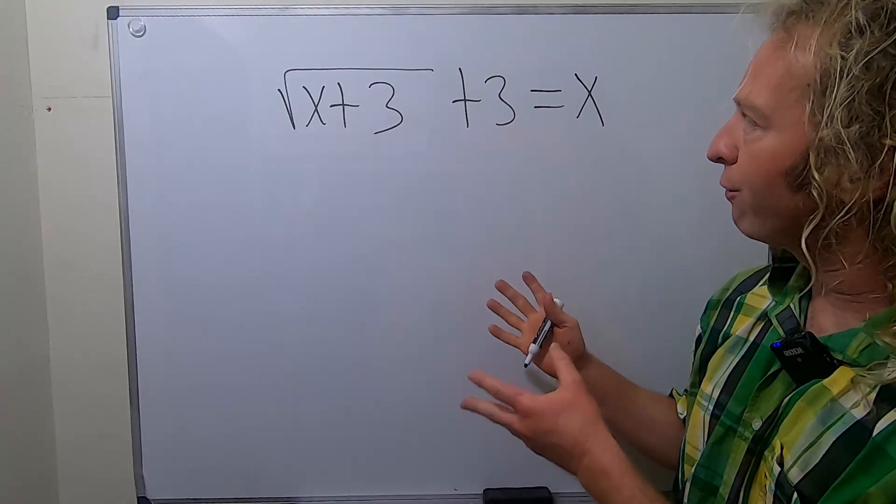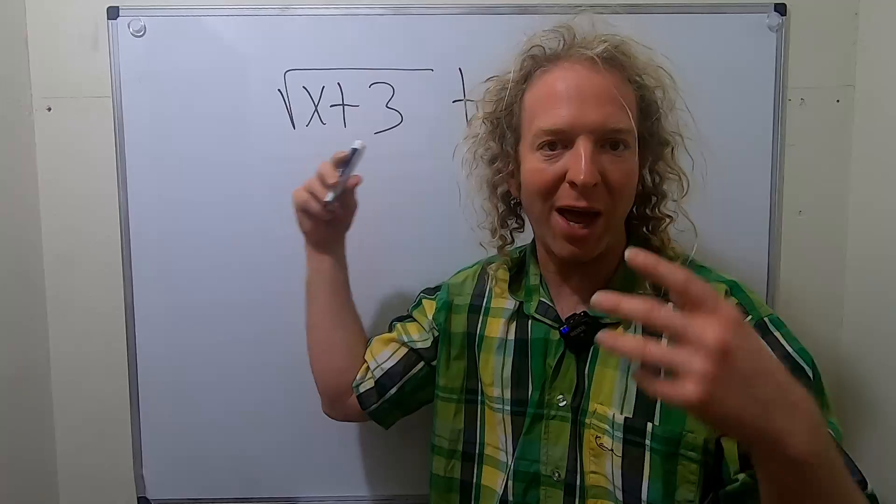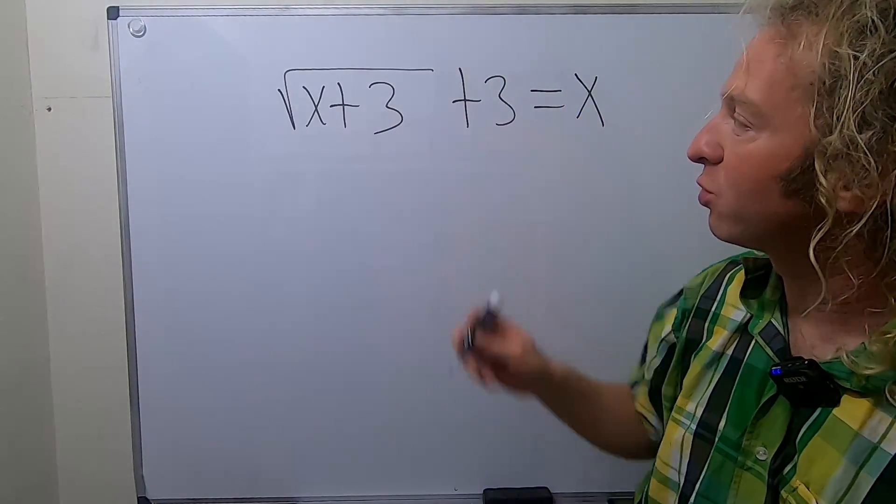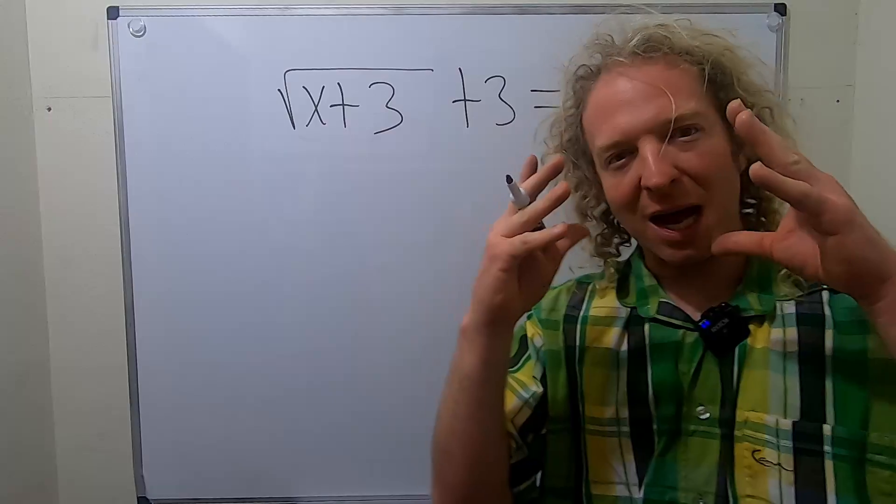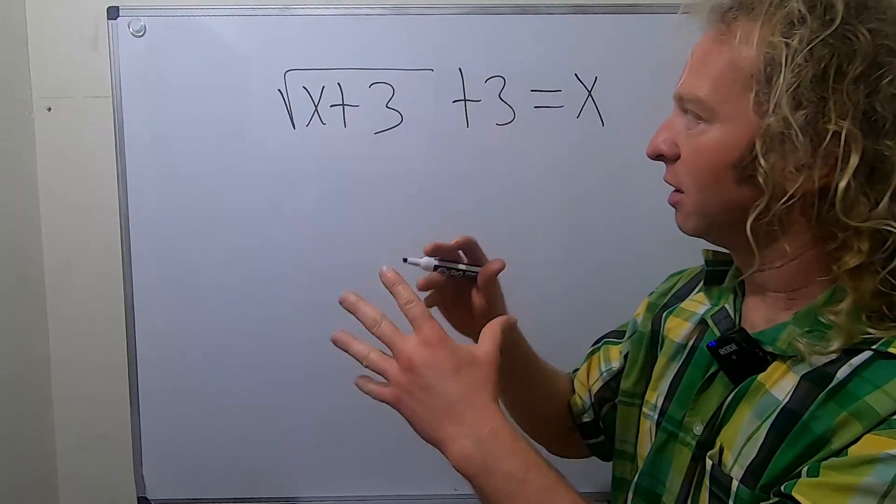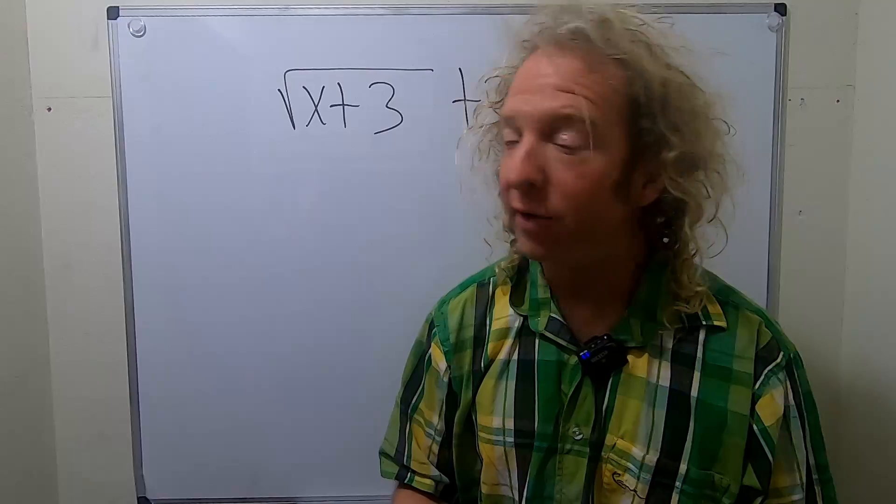Hi everyone, in this video we're going to solve this radical equation. This is a square root, often called a radical, and this equation just has one of them. To do this problem, we have to isolate the radical - we want to get the square root on one side by itself.